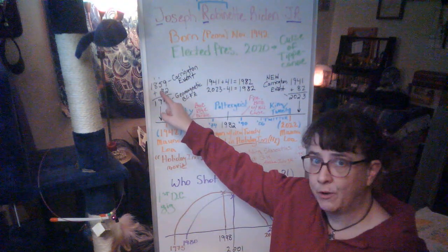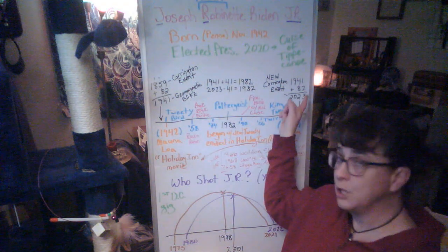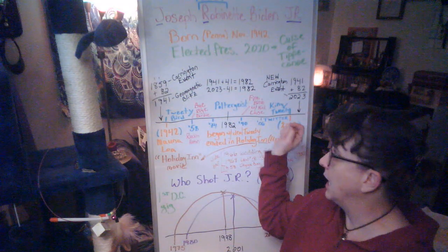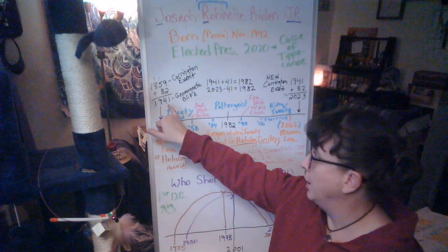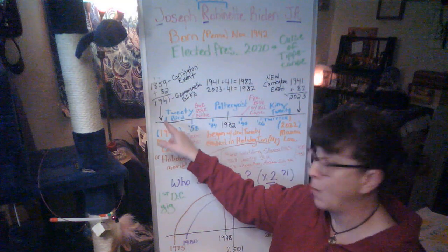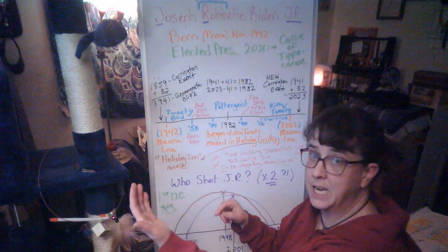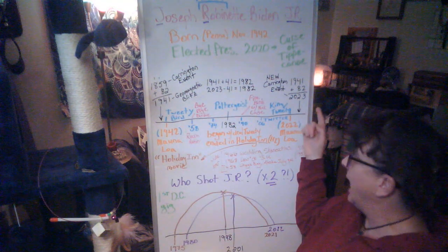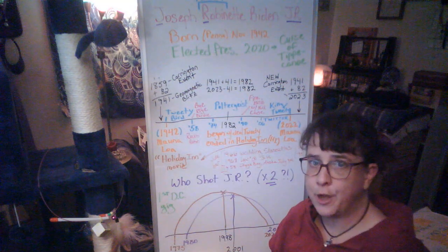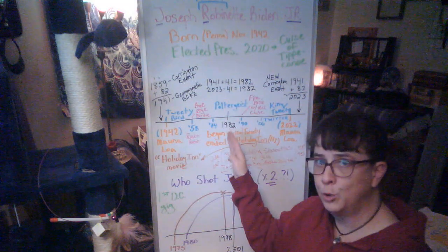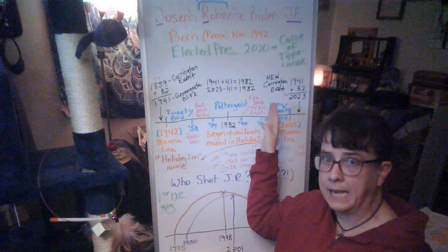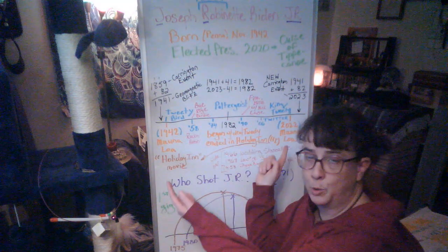The original Carrington event was in 1859, and Jason from Archaics has been predicting a new Carrington event next year in 2023. A friend of his, a year ago, noted this 1941 incident that was a geomagnetic blitz. And that is right in between 1941. So, 1859, 1941, 2023. And there's 82 years in between here.